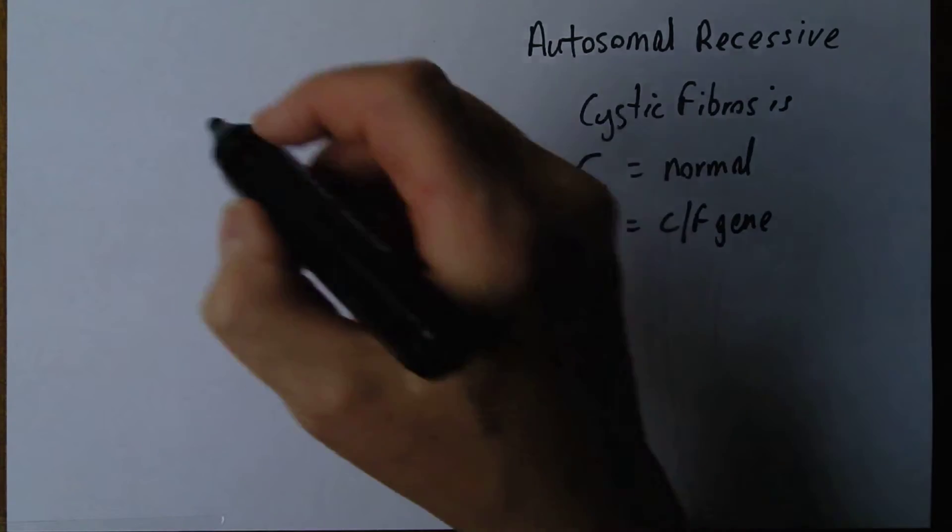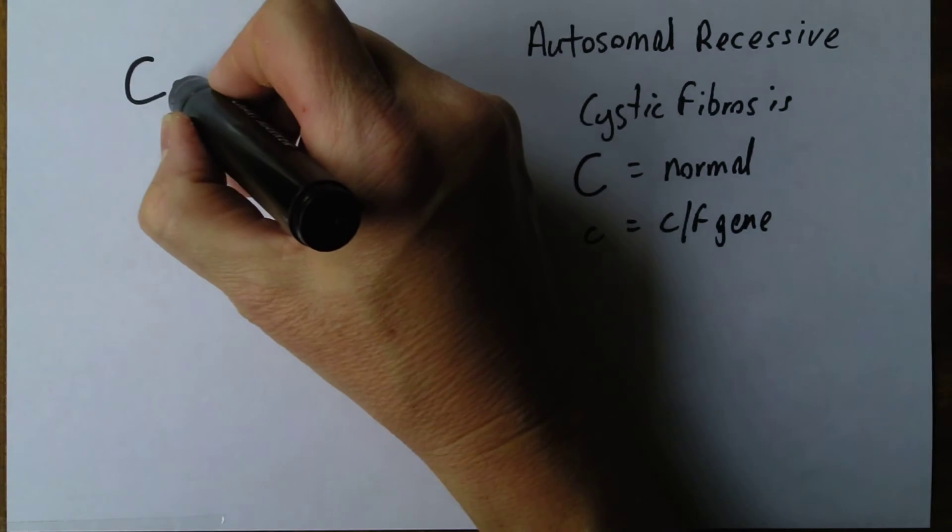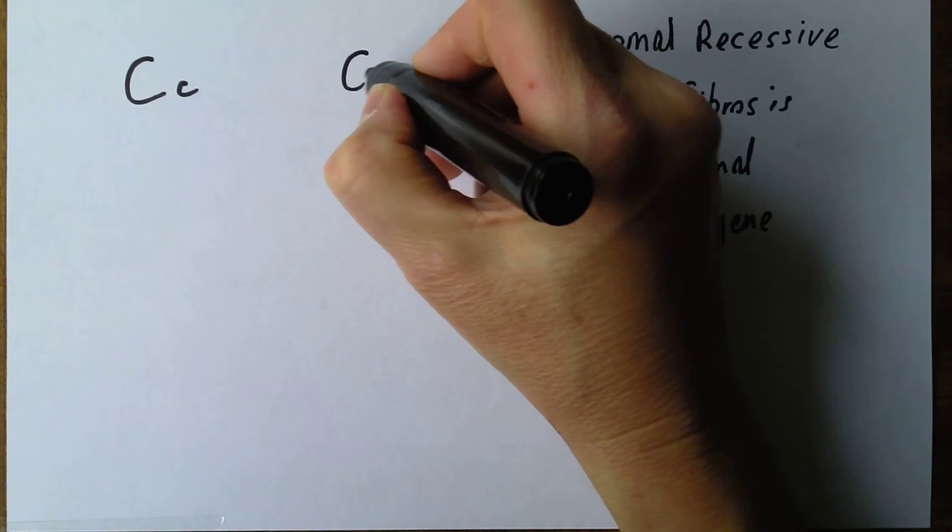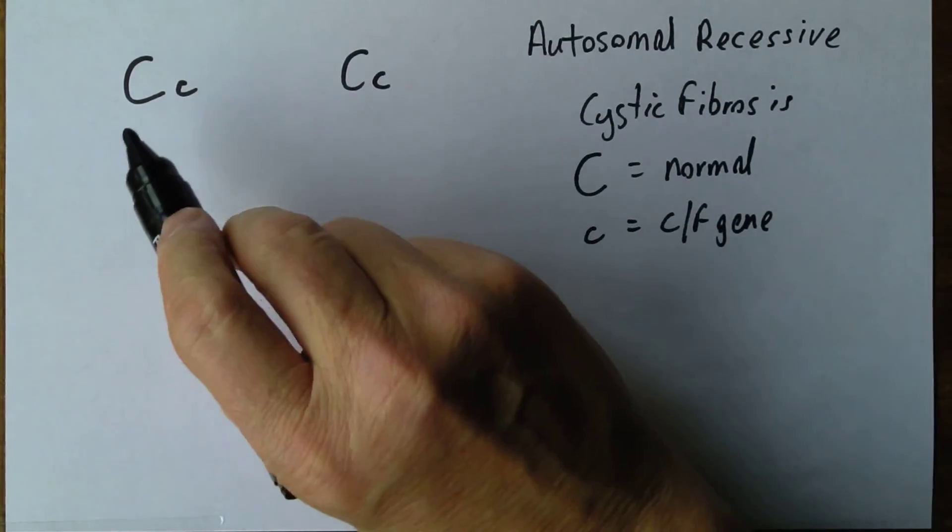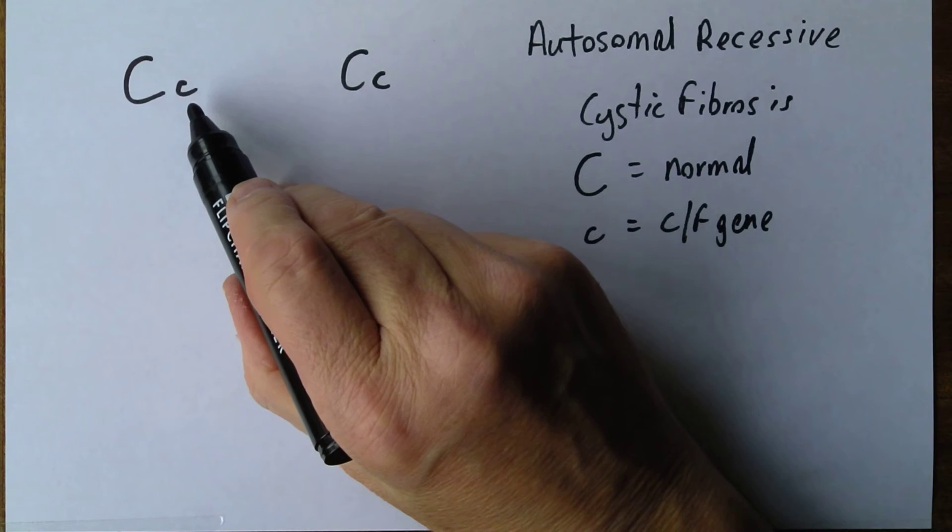Now typically what happens here is we have two parents meet, and they are both big C small c.